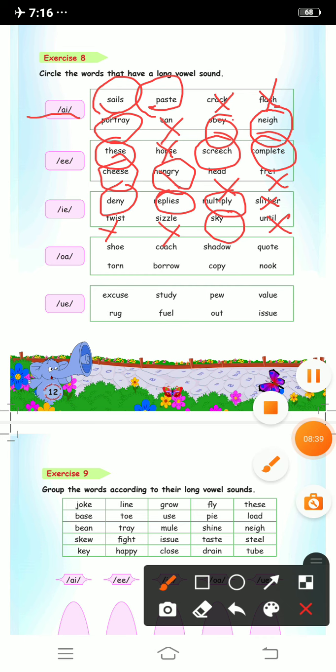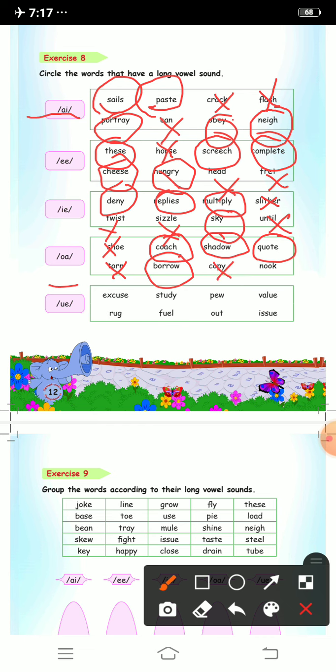Long O sound. First one is shoe, no. Coach, yes, we will circle this. Shadow, yes, because it makes the O sound. Coat, yes. Tone, no. Borrow, yes. Copy, no. And it is nook, not nuke, so we will not circle because it doesn't make the O sound.